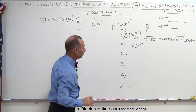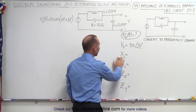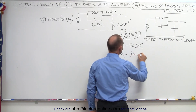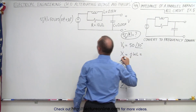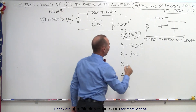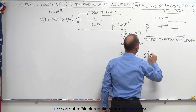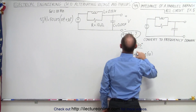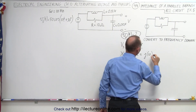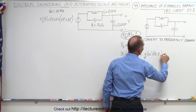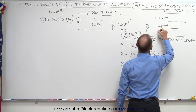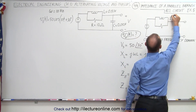For the inductive reactance, we know that it's equal to j times omega times L. Omega in this case is equal to 10, and L was given as 0.5 henries. So 10 times 0.5 gives us j5. That gives us j5 for the inductor, and on the input voltage we have 50 with a phase angle of 30 degrees.